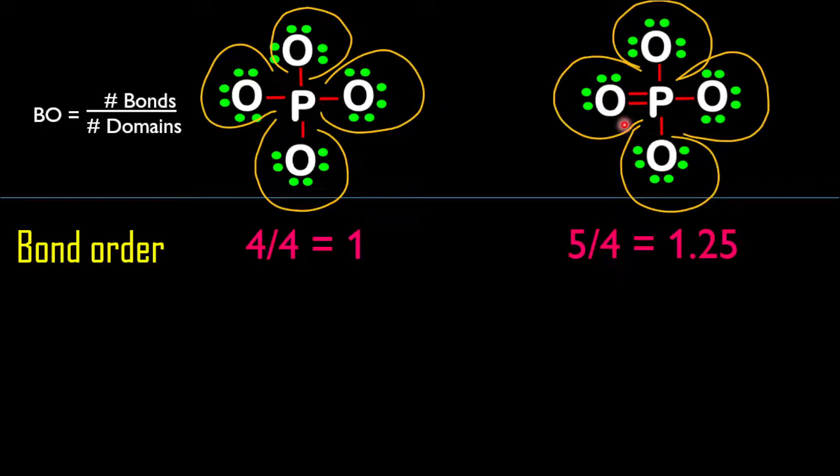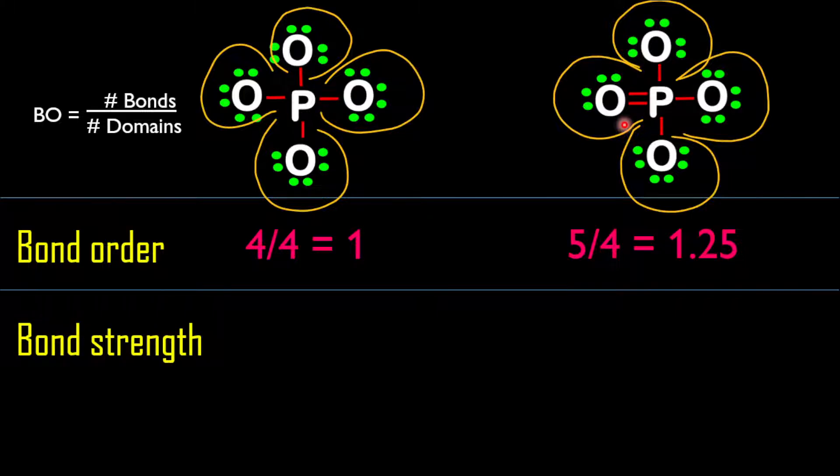Based on the bond order, we can predict the bond strength. The point to note here is that the larger the bond order, the stronger the bond. Therefore, we can conclude that the first structure is weaker compared to the second structure.